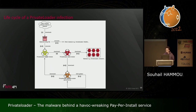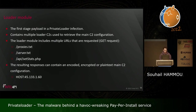One of the payloads can be a service or persistence module, which schedules itself to run at regular intervals, checks for self-updates, and downloads another loader to keep the infected bot always part of the botnet. The loader module is the first stage and includes multiple loader C2s used to retrieve the main configuration. It sends GET requests to multiple URLs, and the responses can contain encoded, encrypted, or plaintext main C2 configurations.